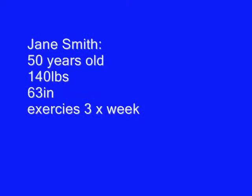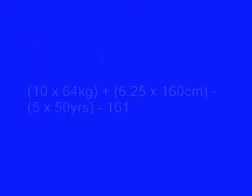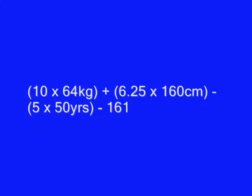For this example I'm going to use Jane Smith. Jane is 50 years old, weighs 140 pounds, is 63 inches tall, and exercises three times a week. Converting her measurements: 140 divided by 2.2 gives 64 kilograms, and 63 inches times 2.54 gives 160 centimeters. I'm now ready to plug all of that information into the formula — the 64, the 160, and the 50.